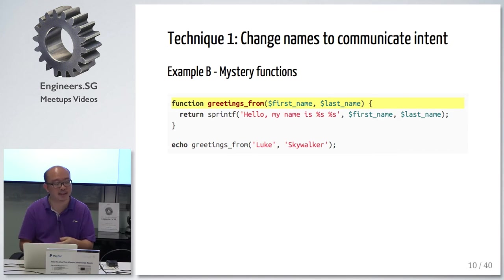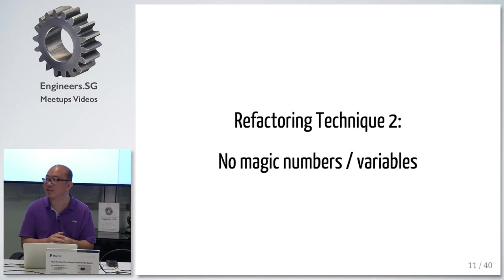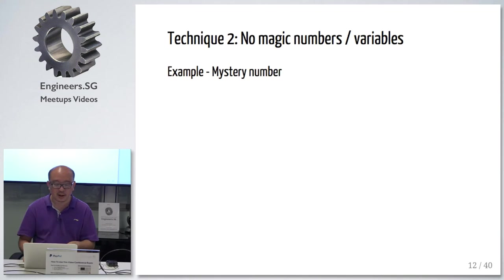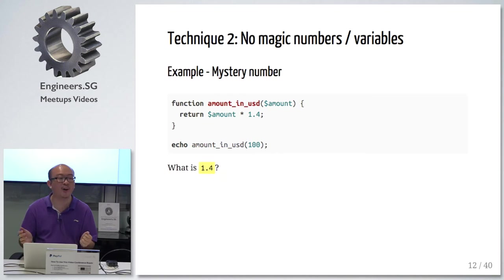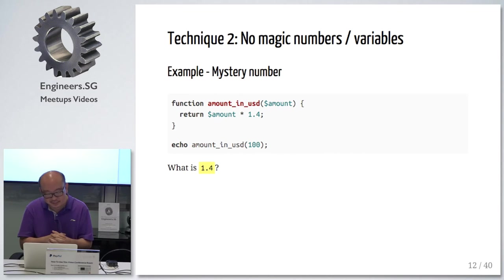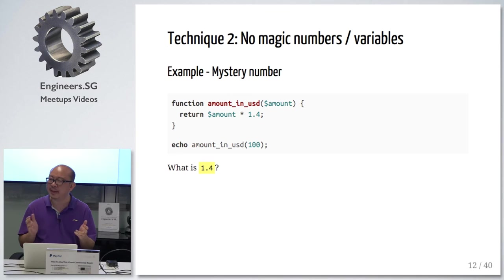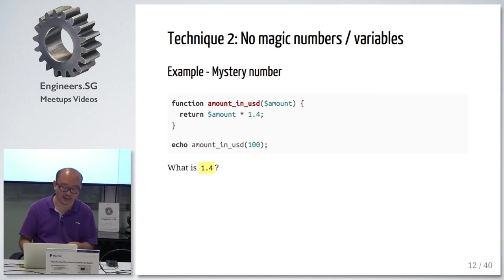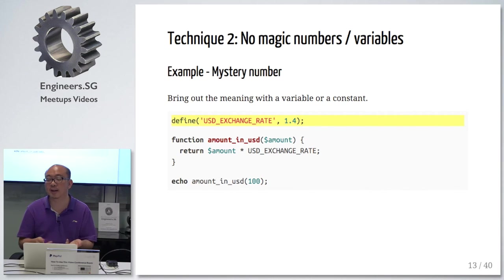An extension to that is about magic numbers. Suddenly you find in your code a mystery number — like what the hell is this 1.4? What does that mean? You have an amount in USD, you pass in an amount, and you have 1.4 inside. Look at the function, you probably have a guess — what does this 1.4 mean? Probably means exchange rate, maybe. Ask around, ask your colleague, hey what is this 1.4? You check the git log and find the guy who put it in. So what do you do? You refactor it. You change it into something meaningful. The thing has to communicate intent. So you change it with a constant, you define it, and then you can use it in your code.